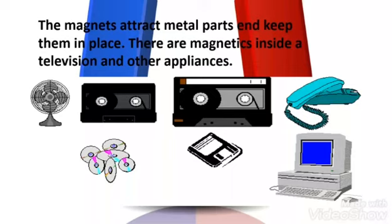And that's the end of the lesson about magnets. Remember, a magnet attracts some metal objects to it. These objects are called magnetic materials. Objects that are not attracted to a magnet are non-magnetic materials.